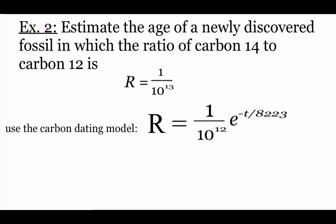Taking a look at our next example, we're going to do a little carbon dating to figure out how old a recently discovered fossil is. When you're doing carbon dating, you'll look at the ratio of carbon-14 atoms to carbon-12 atoms. We're given an R value of 1 over 10 to the 13th power. Our carbon dating model says R equals 1 over 10 to the 12th power times e to the power of negative t divided by 8,223.